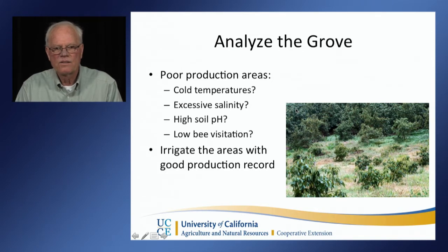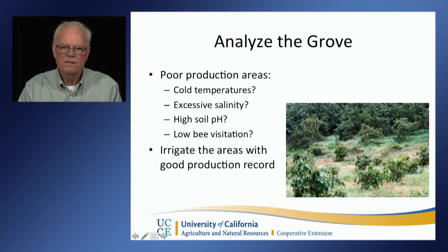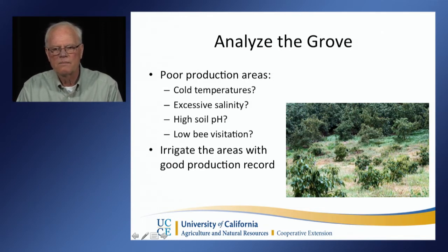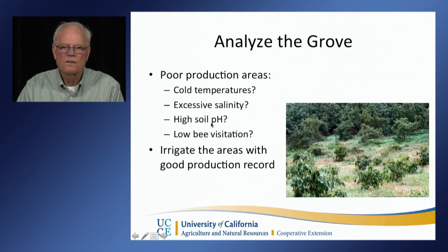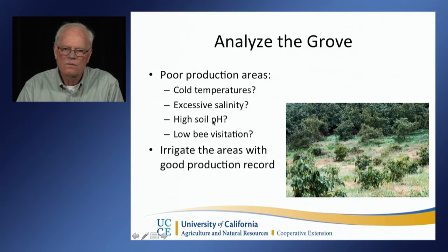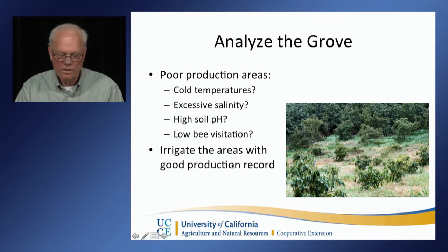Go out and analyze the grove. Are there areas with cold temperatures or low-lying positions where trees are more affected by cold, flower drop, and leaf drop? Are there areas with excessive salinity or high soil pH? Most subtropicals cannot contend with high soil pH, and you have reduced yields in those areas. Go through the orchard, find those areas with low production, and then irrigate only the areas with a good production record.